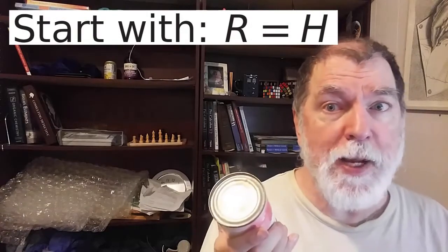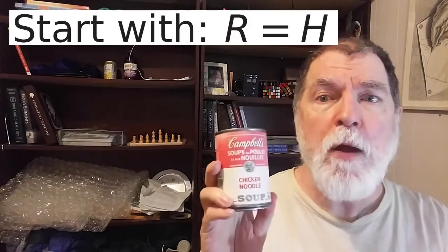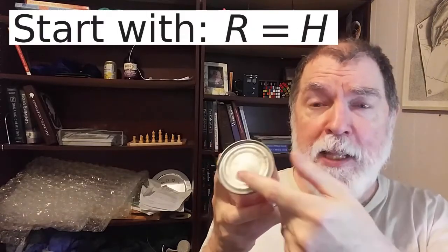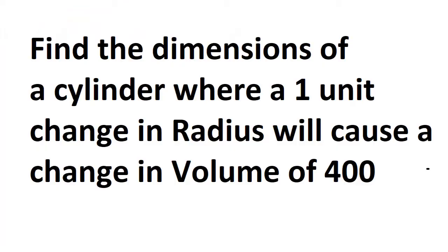Here's another question that we can ask. What if we start from a place where the height and the radius are the same? Let's find the dimensions of the cylinder where a one unit change in radius will result in a change in volume of 400 units.